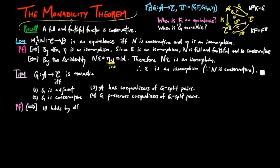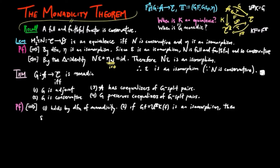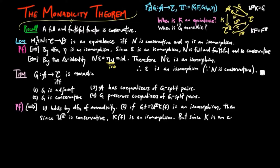To prove the forward direction: for condition 1, G is adjoint by definition of monadicity. For condition 2, if GF, which equals UTK composed with F, is an isomorphism, then since UT is conservative, KF is an isomorphism. But since K is an equivalence, it is also conservative, and thus F must be an isomorphism as well.